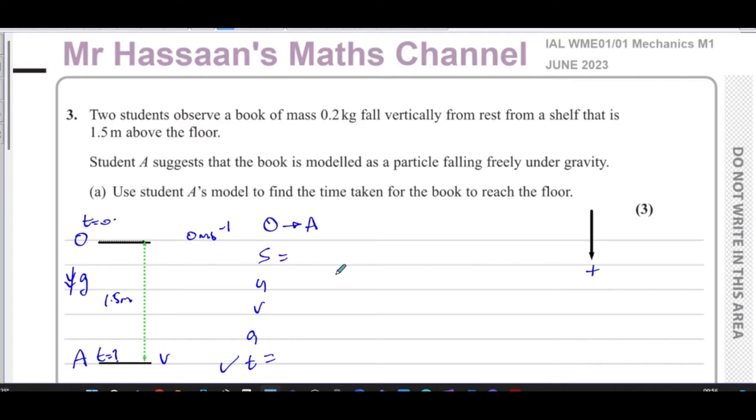So if down is positive, then S is 1.5 meters, it's going to be positive 1.5 meters. U is going to be zero. V, we don't know. A is going to be also positive 9.8 meters per second squared. Why? Because A acts downwards, and we're taken down as positive, and T is what we have to find. So we have to find what T is.